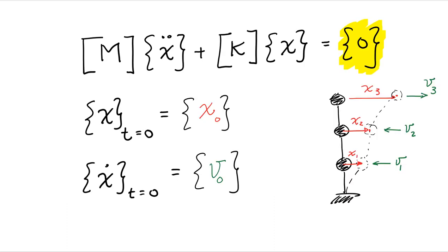So consider here the case of a multi-degree of freedom system characterized by the mass matrix M and the stiffness matrix K.